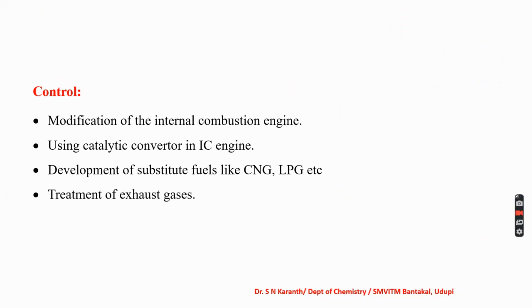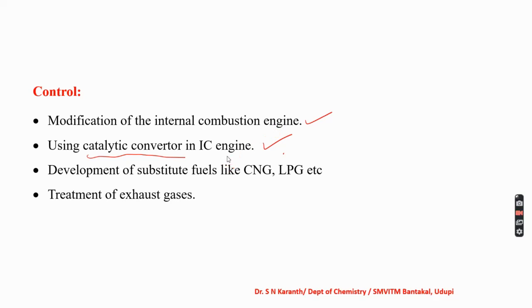How can we control carbon monoxide? One method is modification of the internal combustion engine, or introducing a catalytic converter so that carbon monoxide is absorbed and gases exiting the engine are free from carbon monoxide. Development of substitute fuels like CNG and LPG is important, and even treatment of exhaust gas from factories before releasing it to the atmosphere.